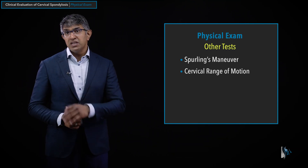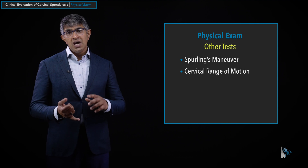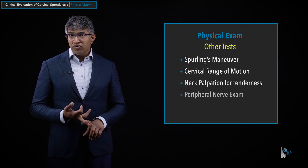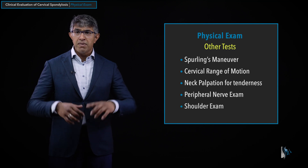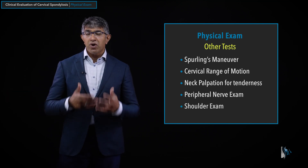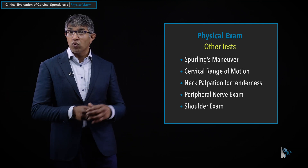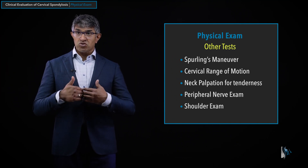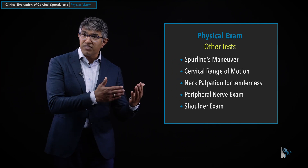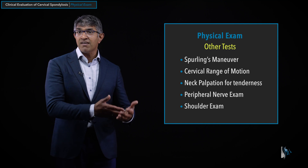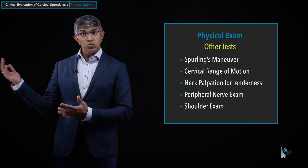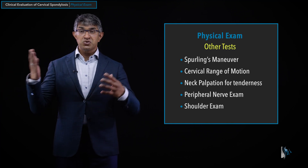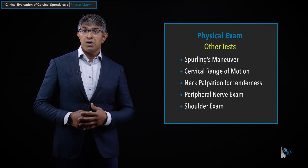As mentioned at the beginning, I also check cervical range of motion, neck palpation, peripheral nerve exam, and a shoulder exam — all part of the exam, though outside the scope of this video. The idea of doing all these tests is to understand whether the physical findings on exam are concordant with your theories about where symptoms are coming from, to make sure the symptoms and exam match up.